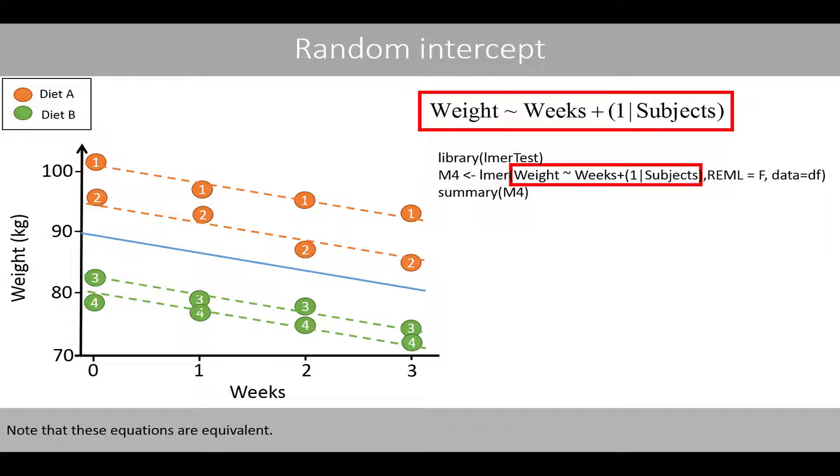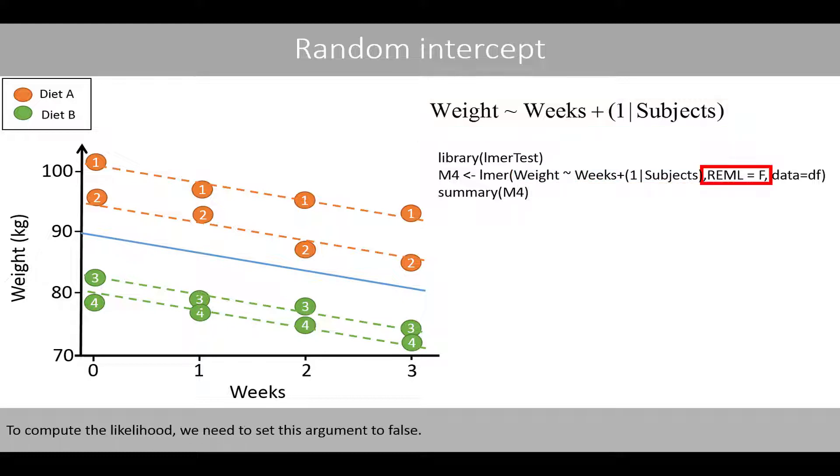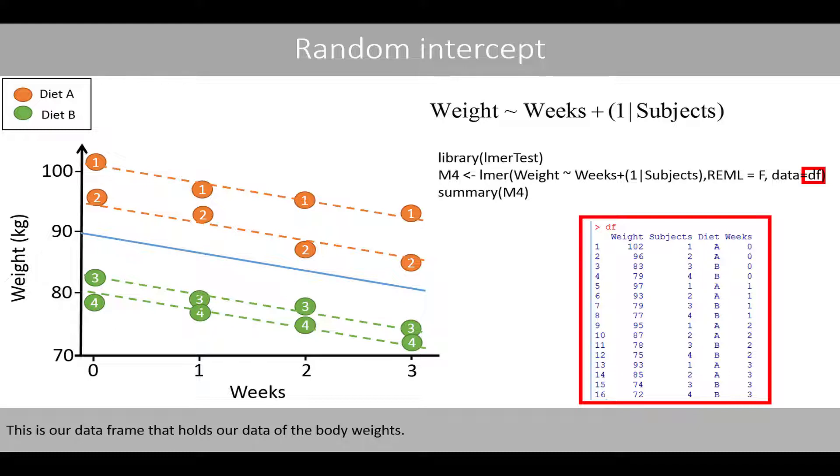Note that these equations are equivalent. To compute the likelihood, we need to set this argument to false. This is our data frame that holds our data of the body weights.